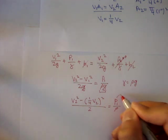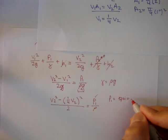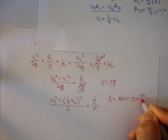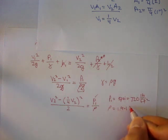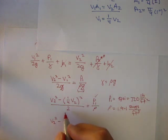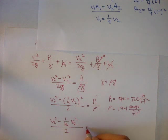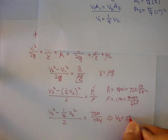And we know pressure at 1. So pressure at 1 is 5 psi. And if we convert that to pounds per foot squared, we get 720 pounds per foot squared. And we know rho of water is usually 1.94 slugs per foot cubed. And so let's plug that in. v2 squared minus 1 sixteenth v2 squared over 2 is equal to p1 which is 720 over 1.94. And now we have one equation, one unknown. We get v2 is equal to 28.14 feet per second. That's v2.